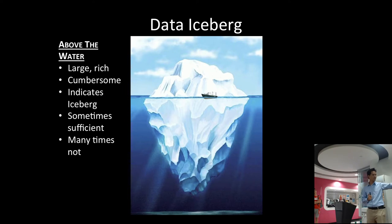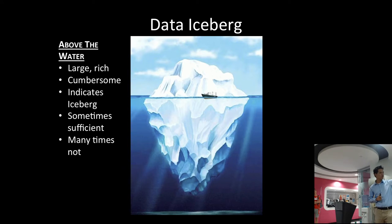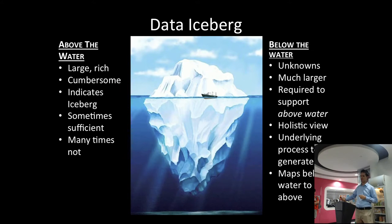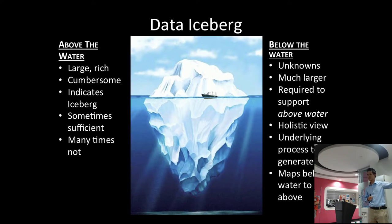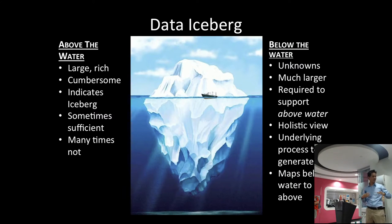What's underneath the iceberg is much larger — 90% of the iceberg is actually under the water. These are things that our IT systems or platforms are not capturing about how humans and social systems are actually behaving. This is what we're missing. Below the water there are a lot of unknowns, we don't see the data. But importantly, what's underneath is required to support everything that's above it. By trying to understand the process of how ice is formed, we can understand what's underneath the iceberg.